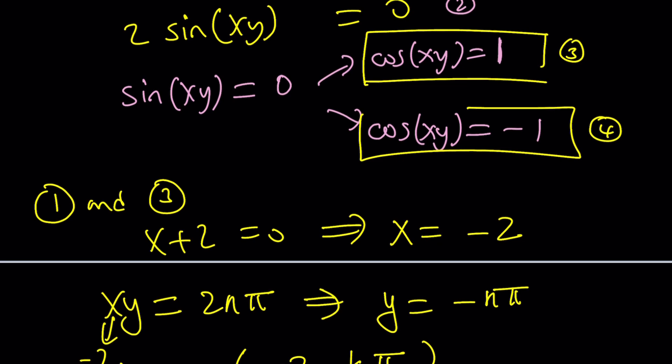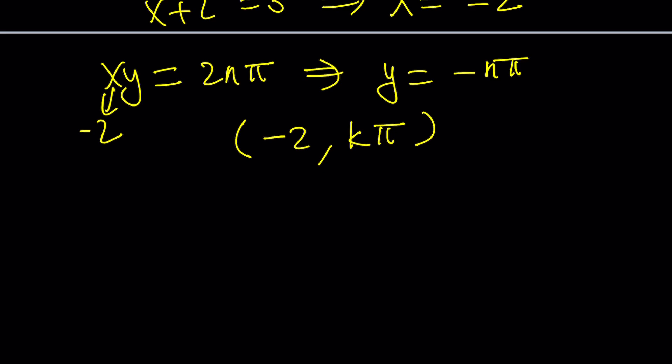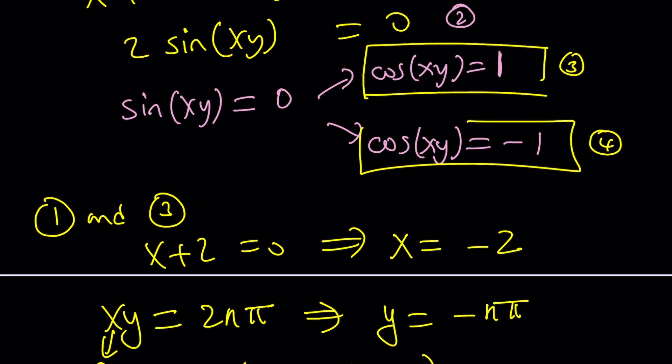Let's go ahead and take a look at 1 and 4. So 1 and 4 is going to give us something different, because first of all, 4 is going to give us cosine of xy is negative 1.